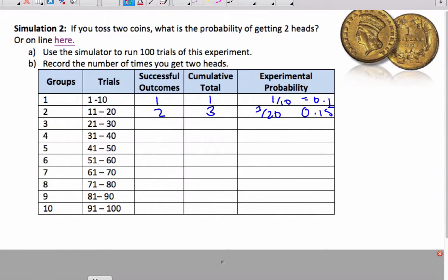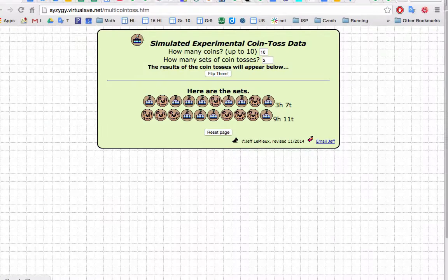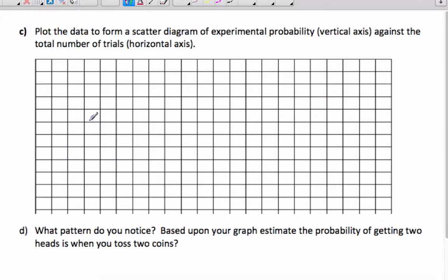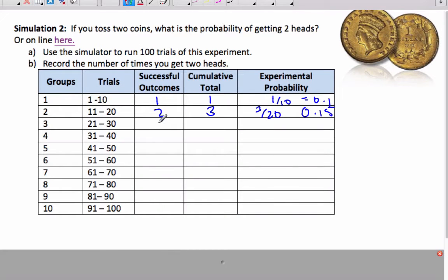I'll do one more, and then you are going to have to finish it on your own. Okay, I'm going to flip them again. And here I have zero cases of two heads. Oh, my goodness. And so if I go back to my thing, I have zero. I have cumulative total is three still, three plus zero. And so now it's three out of 30, which is equal to 0.1.